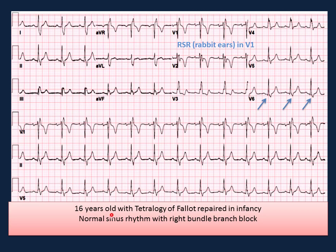This ECG is from a 16-year-old with tetralogy of Fallot repaired in infancy. Looking at the QRS complex in V1, it is a wide complex with an RSR pattern — indicating right bundle branch block. There is also a wide S wave in V6, again confirming right bundle branch block: wide QRS complex in V1 with RSR pattern.